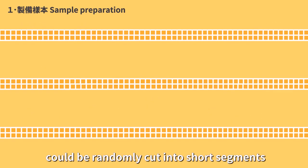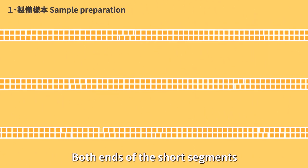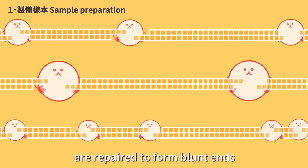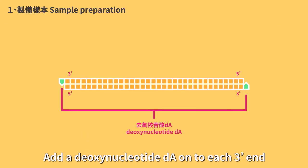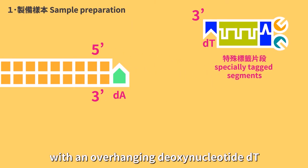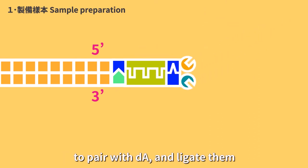Alternatively, the purified DNA sample could be randomly cut into short segments by ultrasonic waves. Both ends of the short segments are repaired to form blunt ends. Add a deoxynucleotide dA onto each 3' end. Use the specially tagged segments with an overhanging deoxynucleotide dT at the 3' end of one of the strands to pair with dA and ligate them.